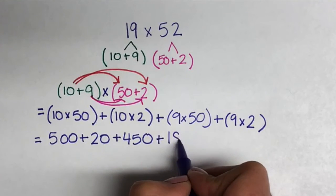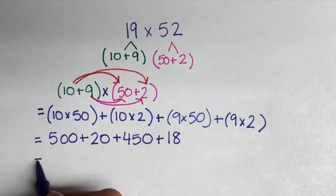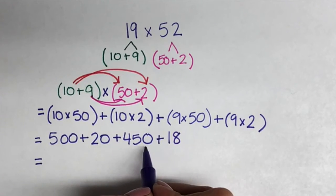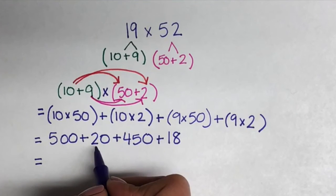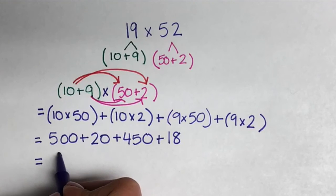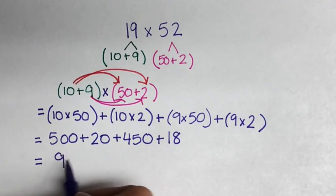Here you have your four partial products. To get your final answer, you're going to add them all up. 500 plus 450 plus 20 plus 18. I'm doing all of this mentally, so I'm picking the numbers that are easier to add first.